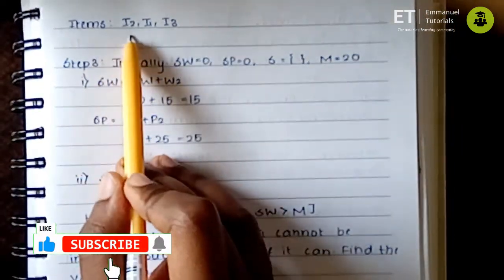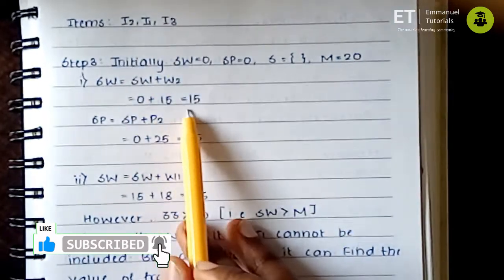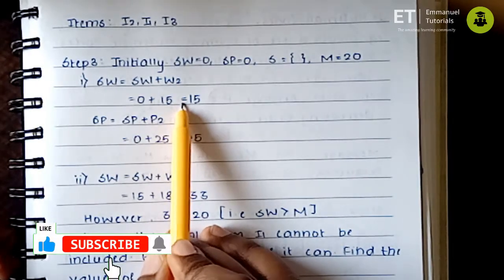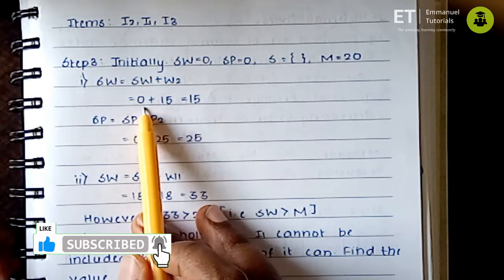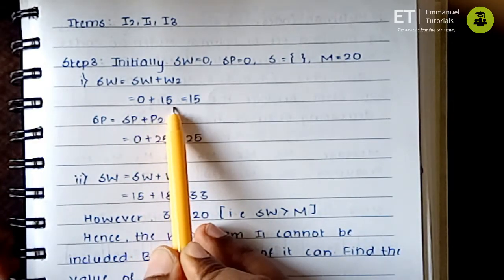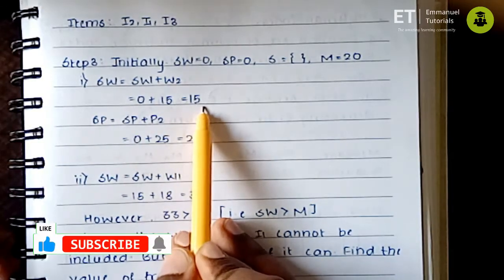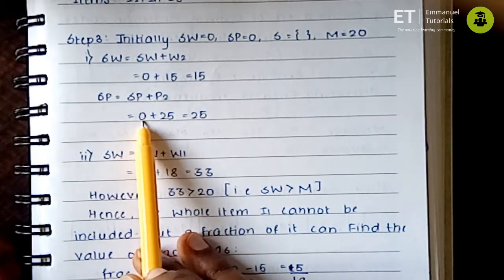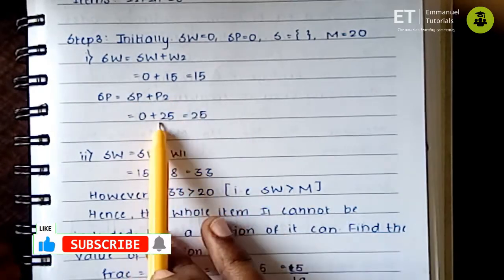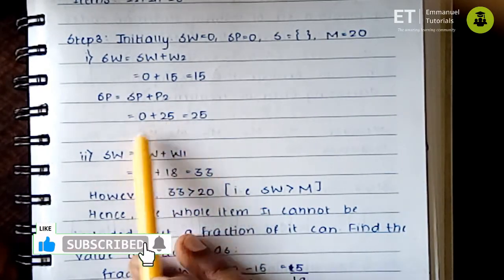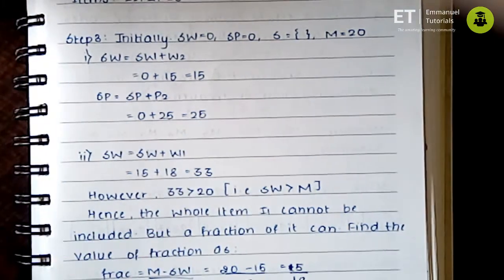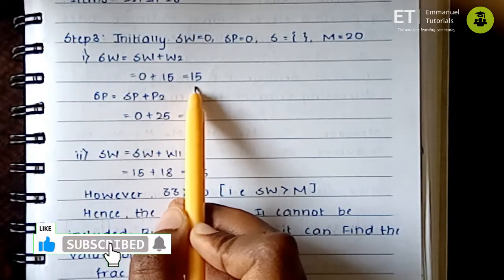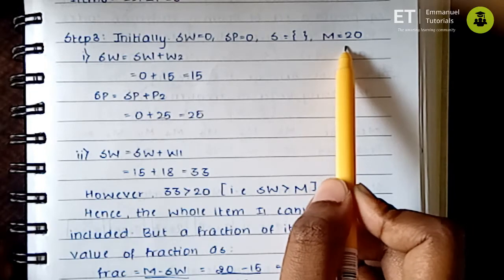The first item to add is I2, whose weight is 15. We add the current sack weight (0) with the item weight (15) to get a total of 15. We also increase the profit: current profit is 0 plus the profit of I2 which is 25, giving a total profit of 25. The current sack weight of 15 is less than the capacity of 20, so we can still add more items.